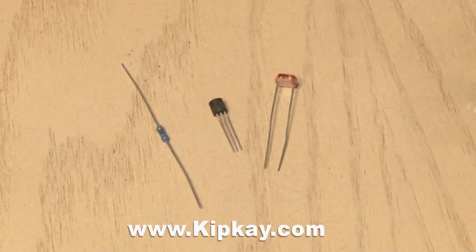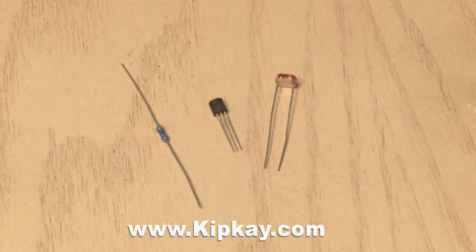Now it's time to build this small circuit which consists of a 4.7K resistor, a photoresistor and a 3904 transistor. You can download the schematic for this for free at kipkay.com.